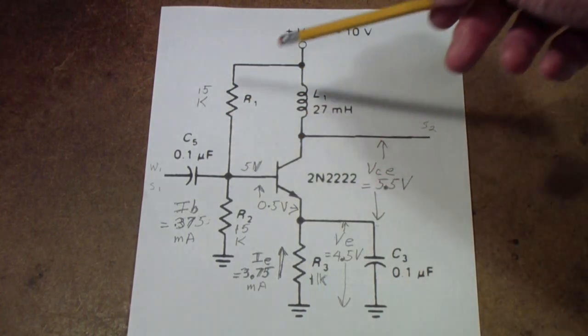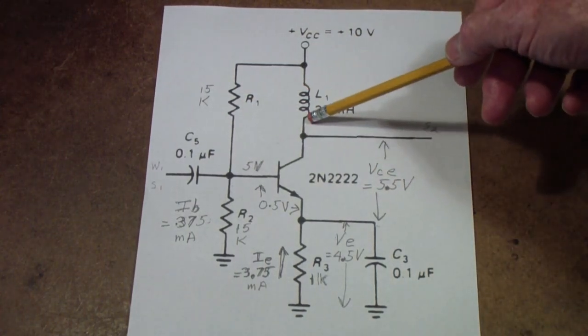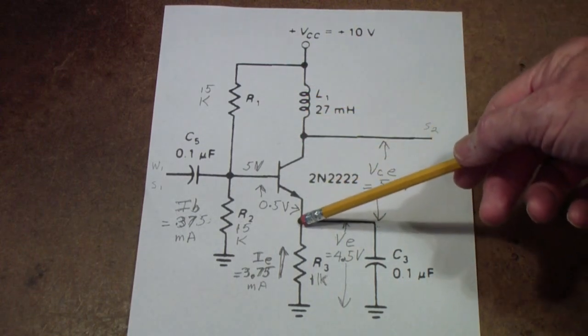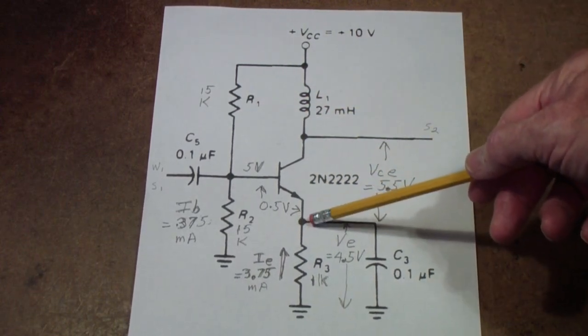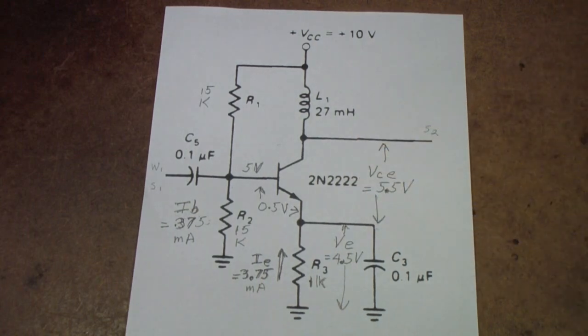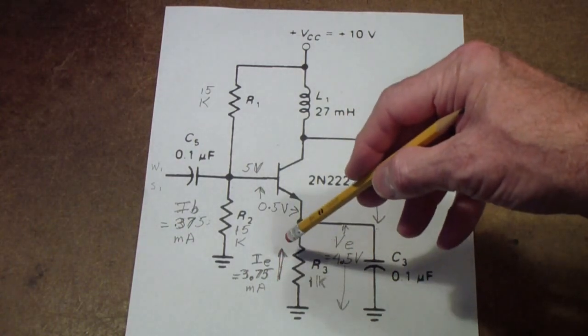With 4 and a half volts here and an additional half a volt across the base to emitter, that gives us 5 volts here. This will be at 10 volts because there's little DC drop through that inductor. With this at 10 volts and this at 4 and a half volts, this will then be at 5 and a half volts across the transistor. So that's how we established the bias network.